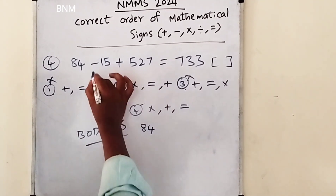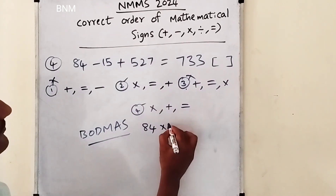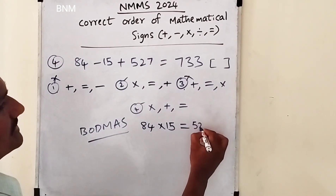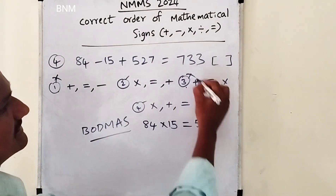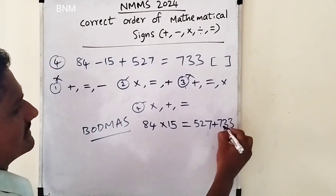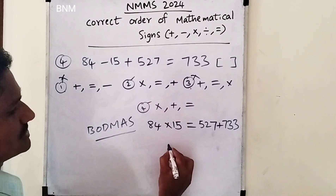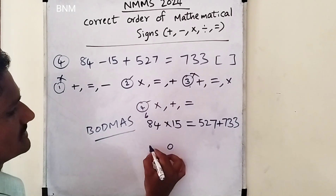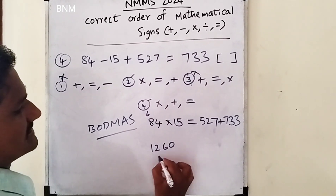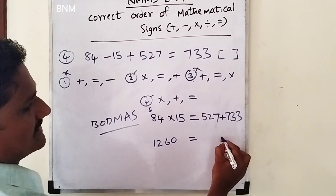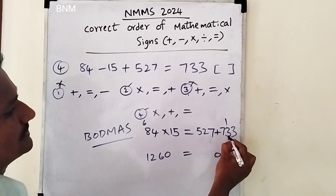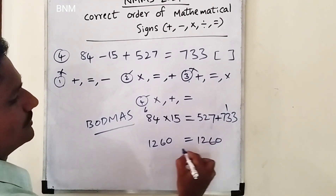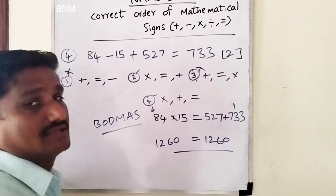Second one: 84 into 50, then equal to 527 plus 733. That's the answer. Multiply the answer: 15 fours are 16, 15 eights are 120. So 126 is the answer. Now the addition: 7 plus 3 is 10, 2, 3, 5, plus 1 is 6, 7 plus 5 is 12. Two equal to. Second answer — most of the two is picked up.